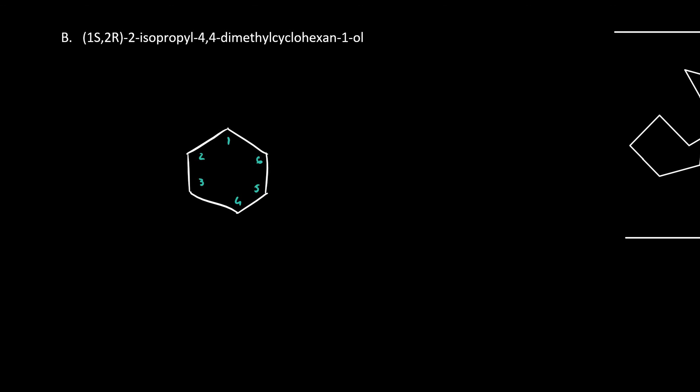Once we've done that, we just draw on our substituents. At carbon-4, we have two methyl groups. We know it's not chiral because it's not indicated here in parentheses, so we can just draw those out on lines. At carbon-1, we have a hydroxyl group, as indicated here, hexane-1-ol. That means there's an OH. At carbon-1, let's just put it on a wedge for now. And at carbon-2, we have an isopropyl group. Let's put that on a wedge as well.